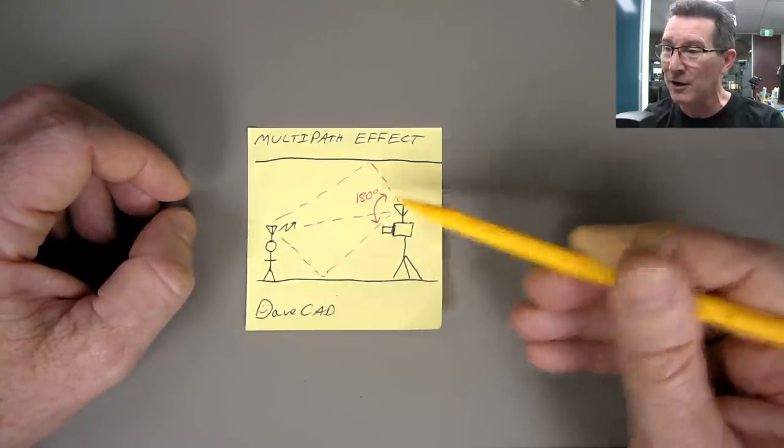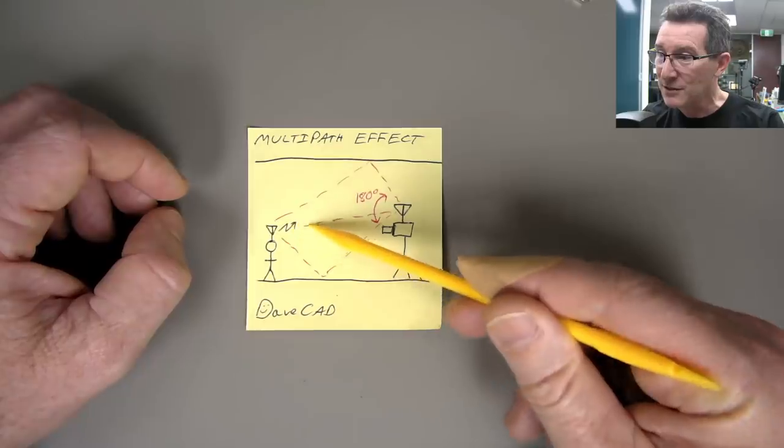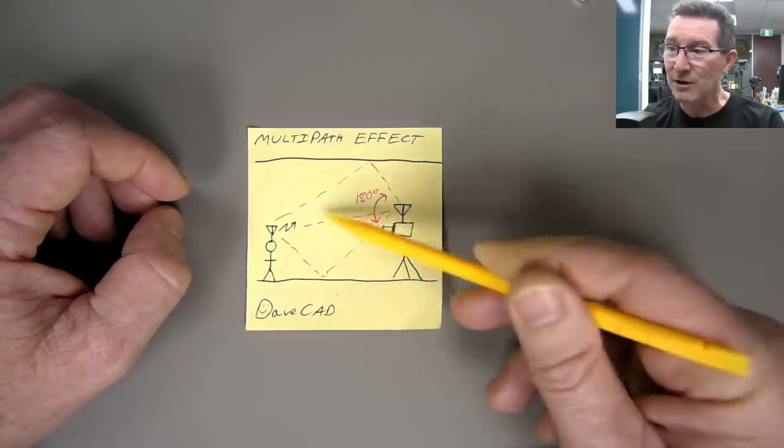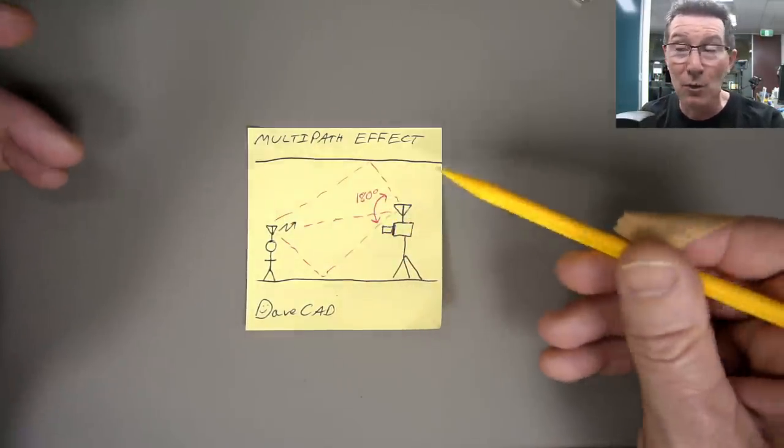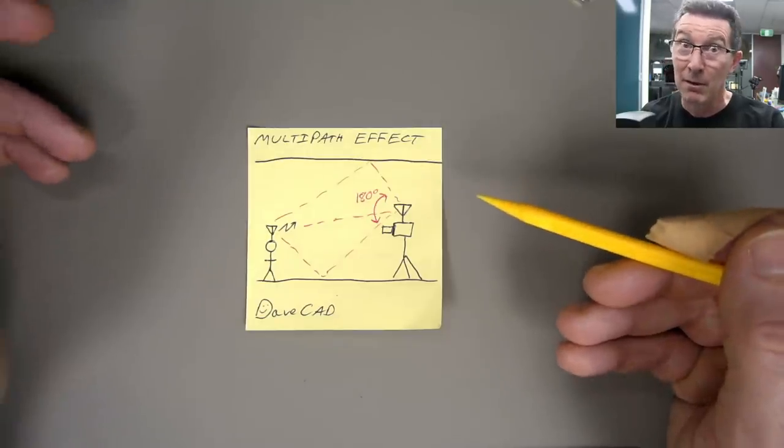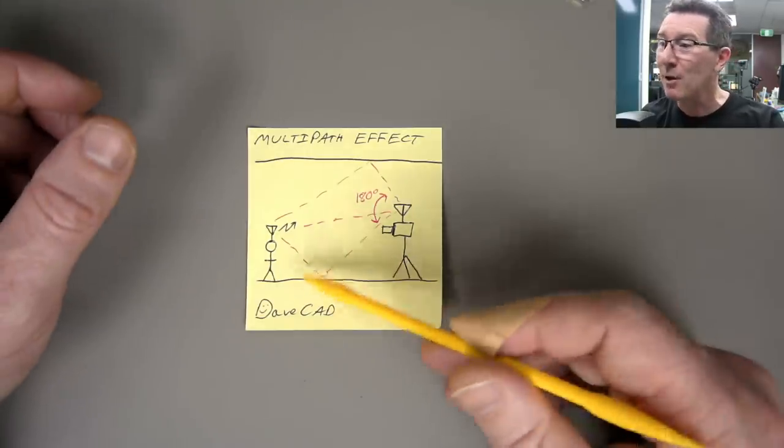You've got little transmitter Dave here. You've got, uh, Dave's camera over here, which only has a single antenna on it. Now, of course, the signal passes line of sight, like this, straight from antenna to antenna. Bob's your uncle. No worries. Right? Uh, no. Trap for young players. This is where you can come a gutzer.